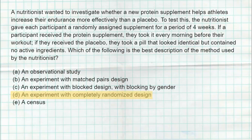The correct answer is D: an experiment with a completely randomized design. Based on what we see here, we had a large group of participants, and it pretty clearly says that half were given a protein supplement and then the ones that were not were given a placebo. It didn't say anything had to do with blocking.